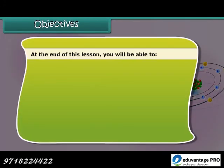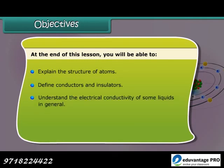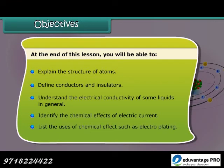Objectives: At the end of this lesson you'll be able to explain the structure of atoms, define conductors and insulators, understand the electrical conductivity of some liquids, identify the chemical effects of electric current, and list the uses of chemical effects such as electroplating.